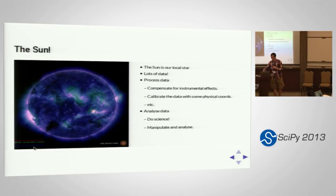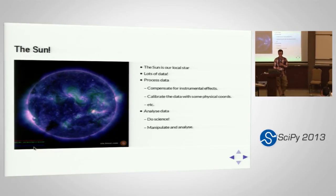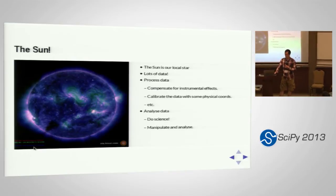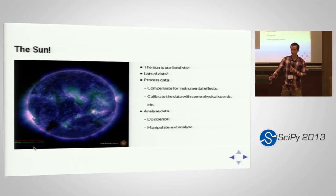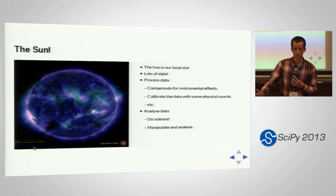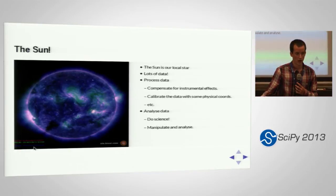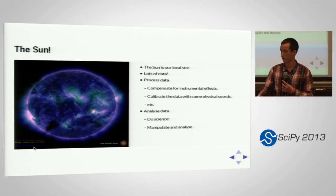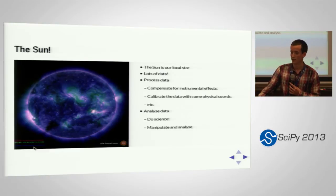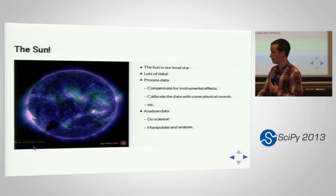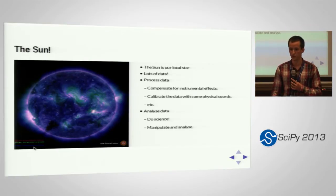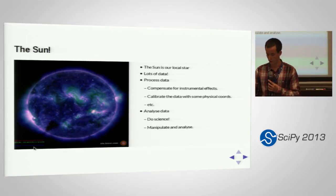There are sort of two main things that need to be done with solar data. You need to process it in the same way you need to process most optical astronomy data. You need to calibrate it — remove the effects of the instrument and then add some physical coordinates to it — and then actually do some science on the data once you've calibrated it. That's what you get paid for.